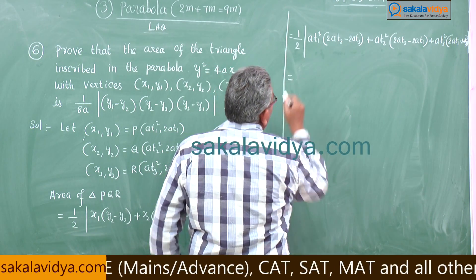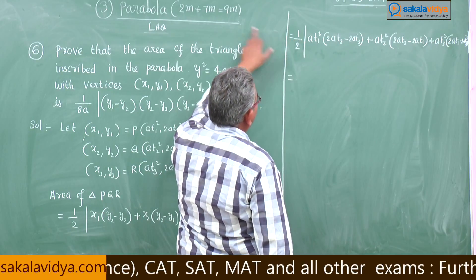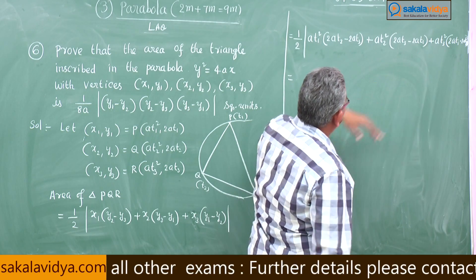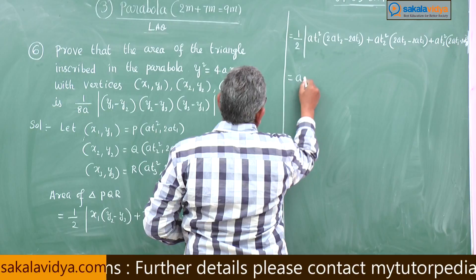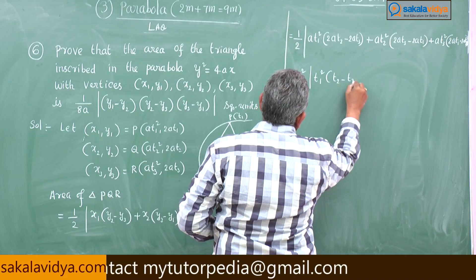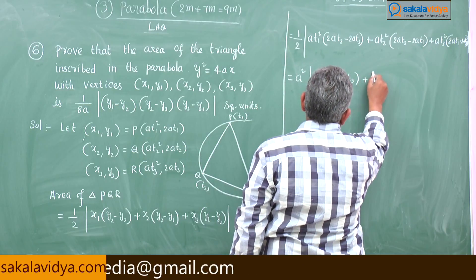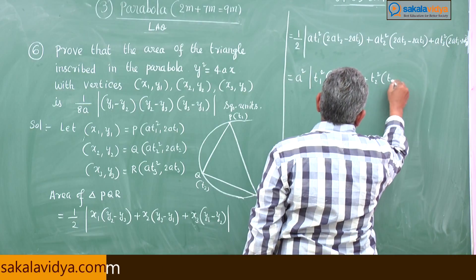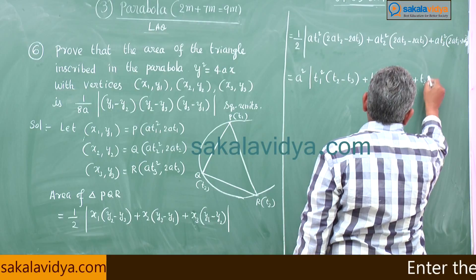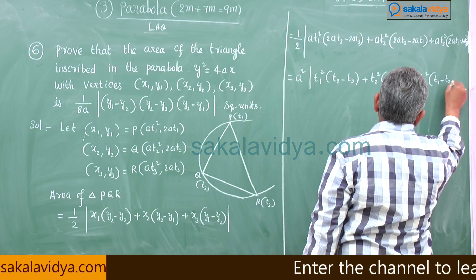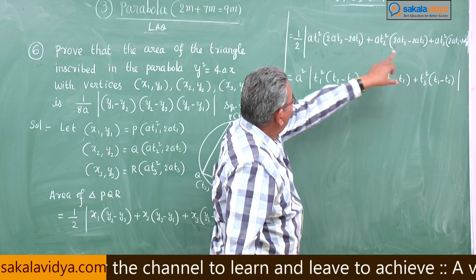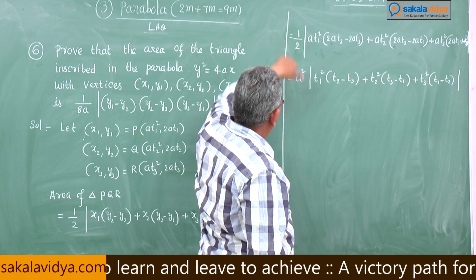We can take out 2a common from each y-difference term, and a from each x term, giving us a factor of 2a × 2a × 2a × a = 2a² outside, leaving t1²(t2 - t3) + t2²(t3 - t1) + t3²(t1 - t2) inside the modulus.